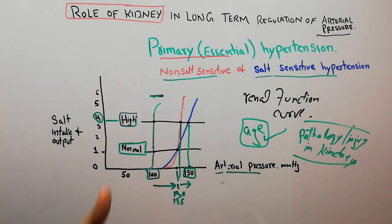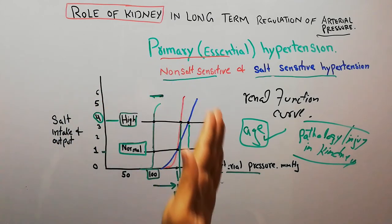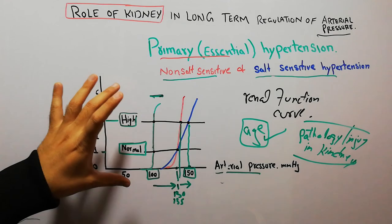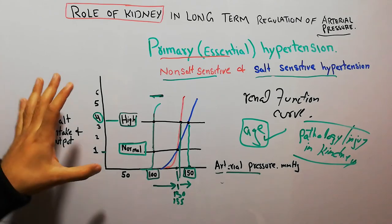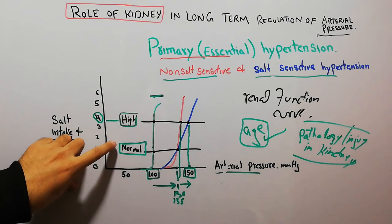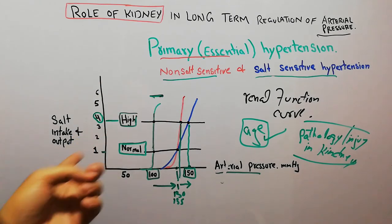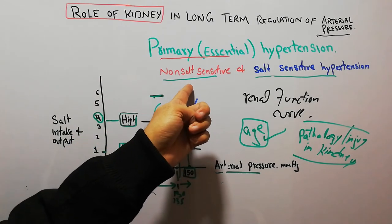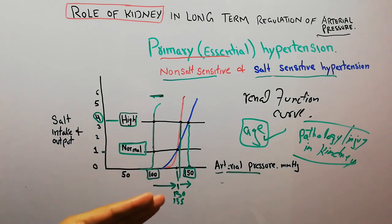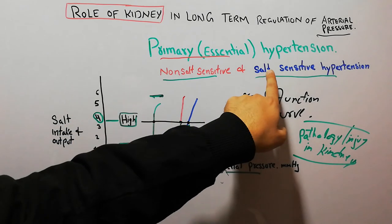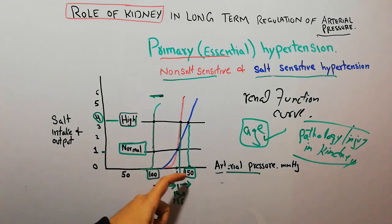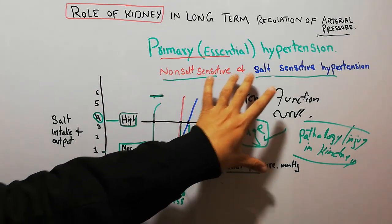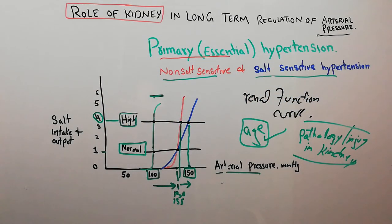The reason for explaining this with the graph is to assess the level of risk for different types of patients. A person with non-salt-sensitive hypertension may not need to strictly avoid salt, but a person with salt-sensitive hypertension must avoid increased salt intake to prevent a rise in arterial pressure. That concludes the discussion on non-salt-sensitive and salt-sensitive hypertension.